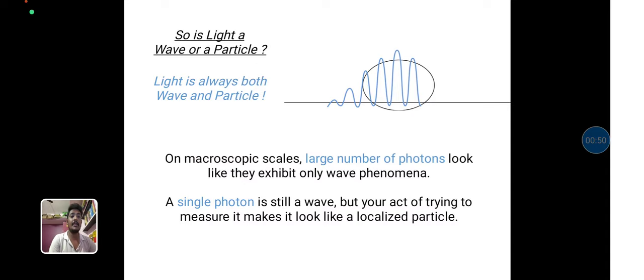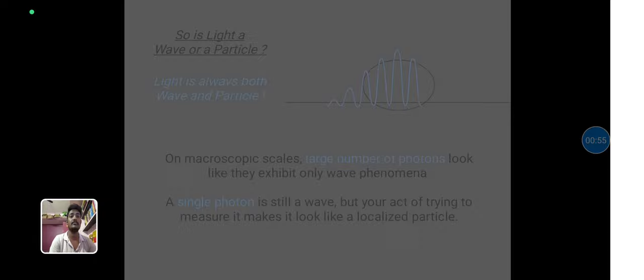A single photon is still a wave, but your act of trying to measure it makes it look like a localized particle.